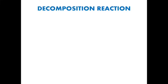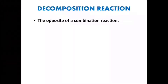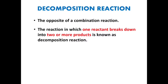Decomposition reaction is the opposite of a combination reaction. In combination reaction, two or more reactants combine to form one single product. On the other hand, in decomposition reaction, one reactant breaks down into two or more simpler products. The reaction in which one reactant breaks down into two or more products is known as a decomposition reaction. AB is the single reactant breaking down into A and B — two products.